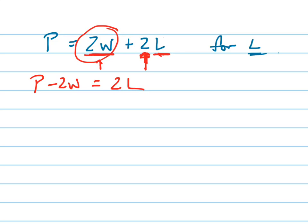And now, how do I get rid of the 2? Since it's being multiplied, I divide both sides by 2, and I'll have L on the right side, and I'll have P minus 2W over 2 on the left side.